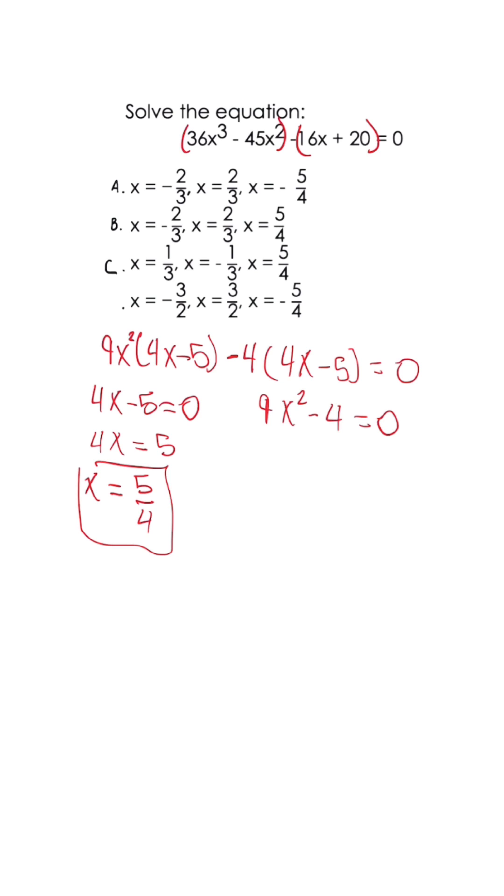With the second factor, we notice something unique—this is the difference of squares. So we have (3x + 2)(3x - 2) equals 0.